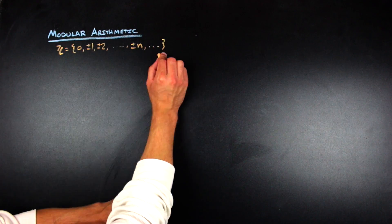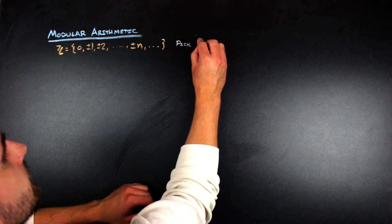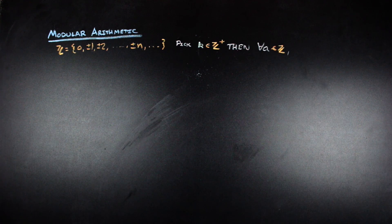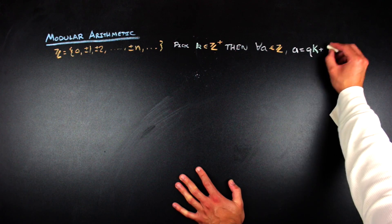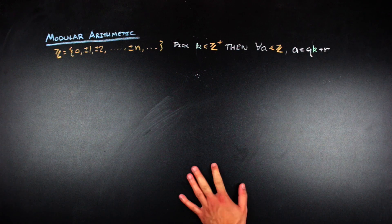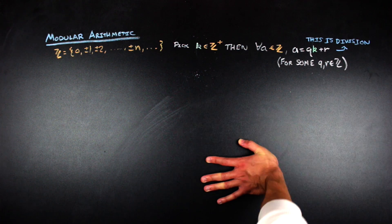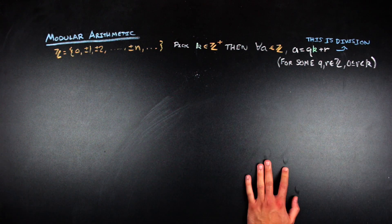Probably the easiest and most intuitive place to work with modular arithmetic is in the integers. If we go ahead and pick some positive integer, for any other integer that we want to choose, we can write that integer as a product of some other integer with the integer we chose first, plus a remainder term. The remainder term is going to be between 0 and k−1, where k is the number we initially chose. This equality is essentially what division is.